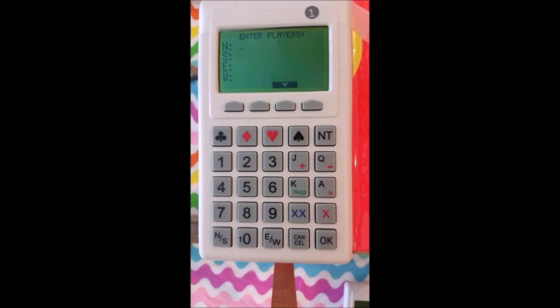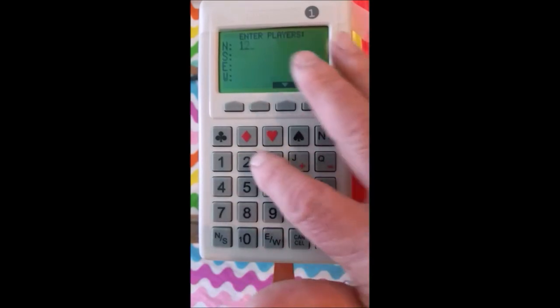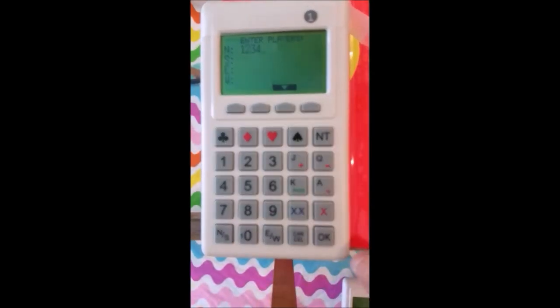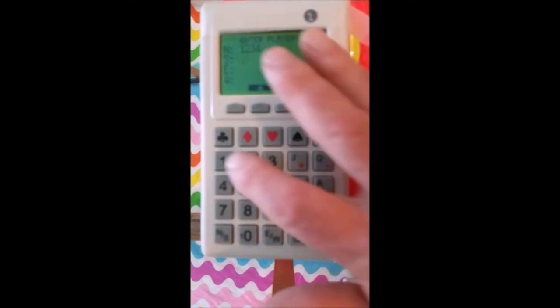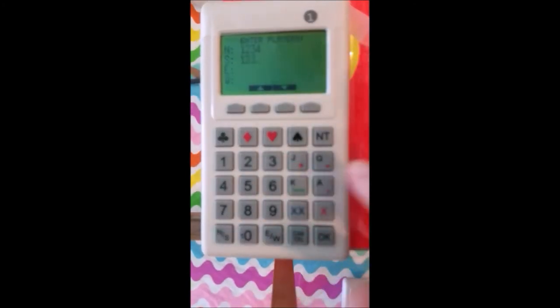It wants to know North's ID. So I'm going to put in North's ID now, which is 1, 2, 3, 4, and say OK. Now it says what's South's ID? In this case, it's 1, 2, 3, 6. And I'm going to say OK again.